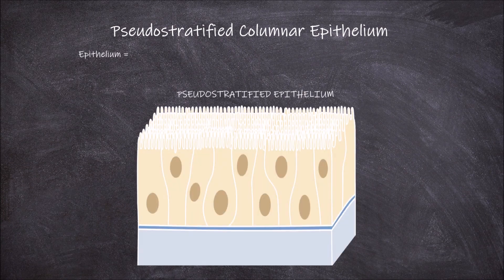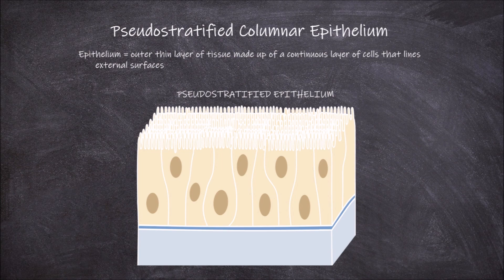The epithelium is the outer thin layer of tissue made up of a continuous layer of cells that lines the external surfaces of the body, the organs and blood vessels, in addition to the internal surfaces of the hollow organs within the body.